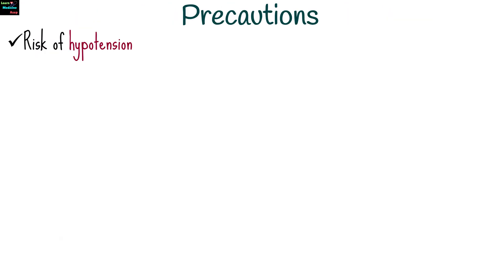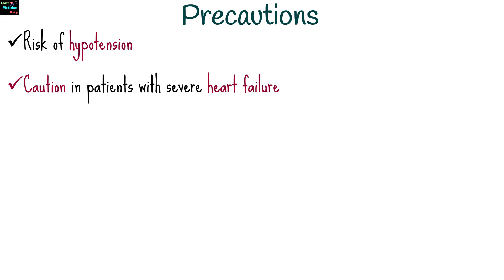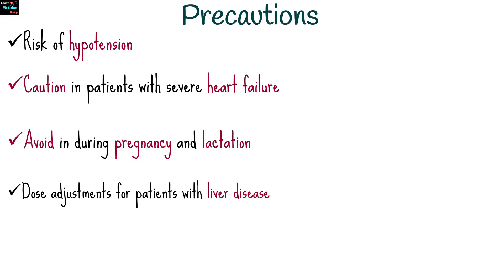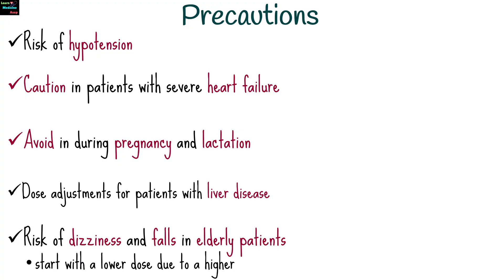Certain precautions should be considered when using silnidopine. It carries a risk of hypotension and should be avoided in patients prone to low blood pressure. Use with caution in patients with severe heart failure. Its safety during pregnancy and lactation is not well established, so it should be avoided unless necessary. Dose adjustments may be needed for patients with liver disease, and elderly patients should start with a lower dose due to a higher risk of dizziness and falls.